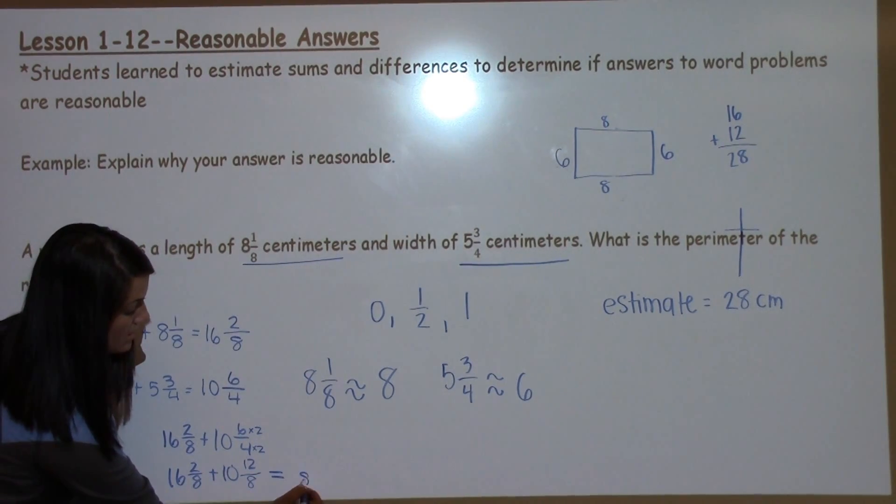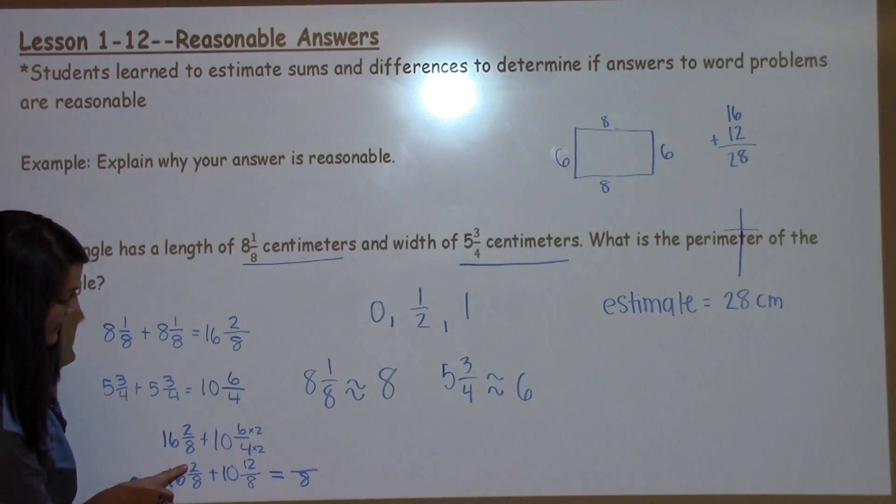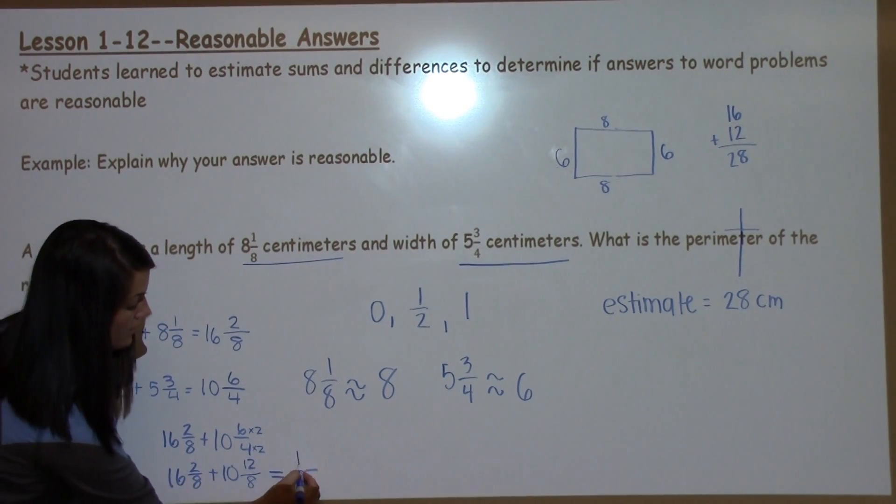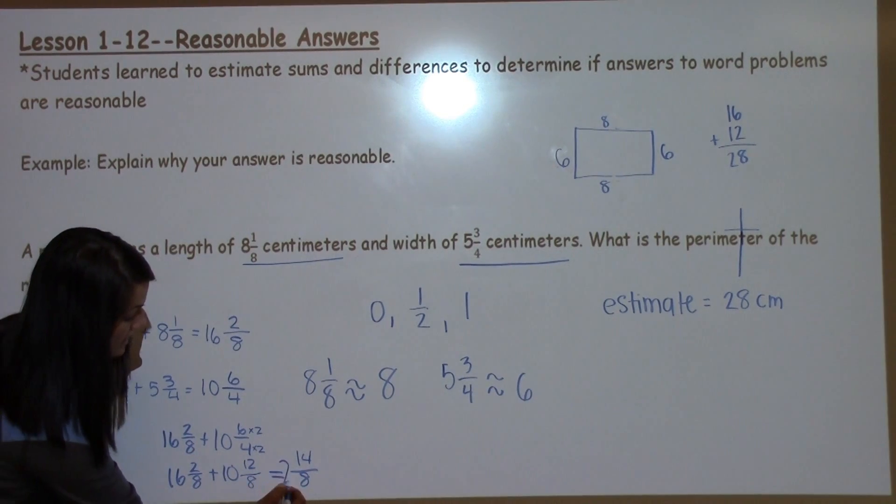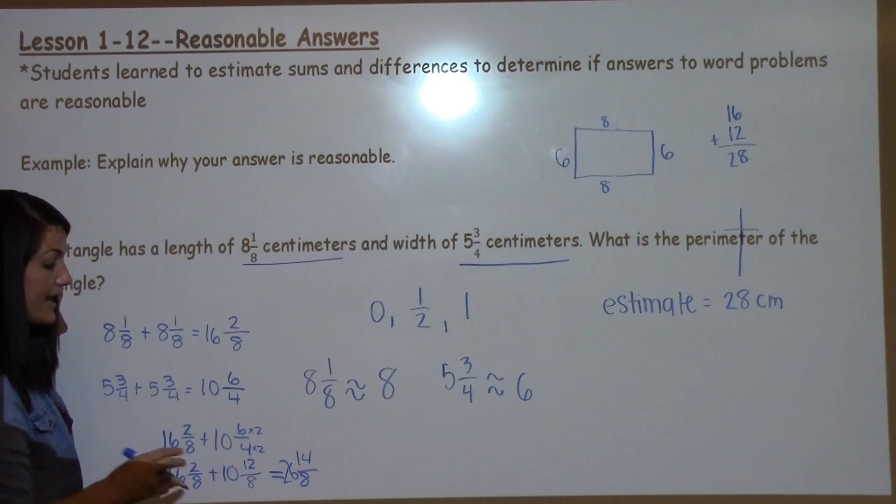My denominators are now the same, so they stay the same. I'm going to add 2 plus 12, which is 14. 16 plus 10, which is 26.